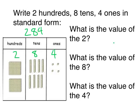Now I'm ready to find the value of each digit. What is the value of the two? Two is in the hundreds place, so I have two hundreds. I'm going to count by one hundred: one hundred, two hundred. What is the value of the eight? Eight is in the tens place. I see that I have eight tens. I'm going to count by ten: ten, twenty, thirty, forty, fifty, sixty, seventy, eighty. The eight is worth eighty.